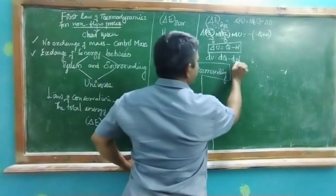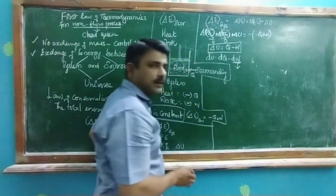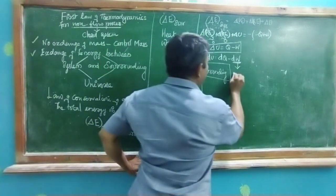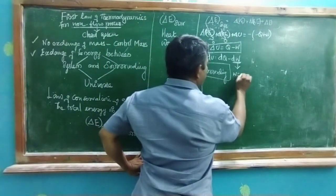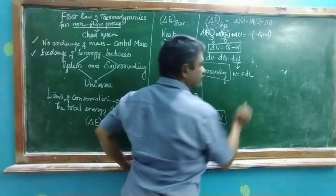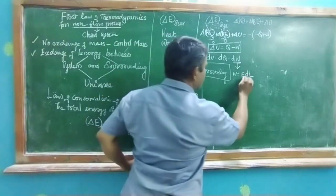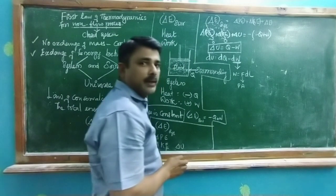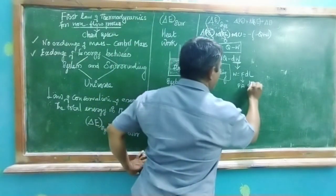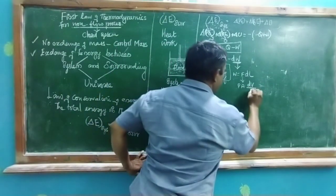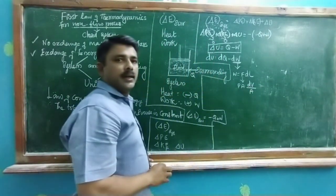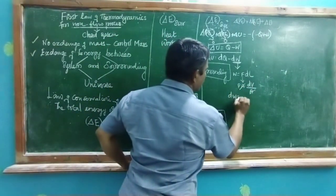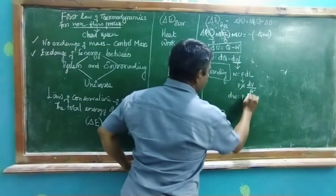Coming to the point of dW — work done on the system. Work is equal to force into displacement. Force is nothing but pressure into area, and displacement is nothing but changes in volume dV per unit cross-sectional area. Hence, area cancels, and dW = P·dV.